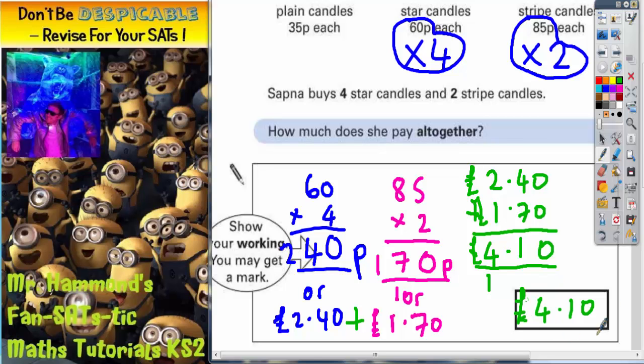Notice they have deliberately not put any units in, so it is very important that you put units in here. So you can either have four pounds ten like that, or it would also be acceptable to write four hundred and ten pence. Either of those two answers are acceptable.